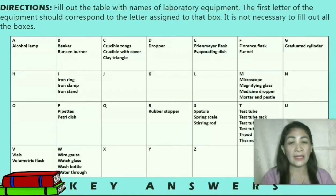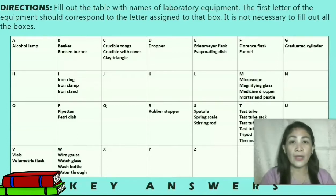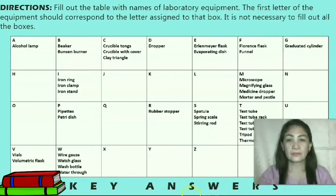Letter H: No instrument assigned to this letter. Letter I: Iron ring, iron clamp, iron stand. Letter J, K, L: No instrument assigned to these letters. Letter M: Microscope, magnifying glass, medicine dropper, mortar and pestle. Letter N and O: No instrument assigned to these letters. Letter P: Pipette, petri dish.